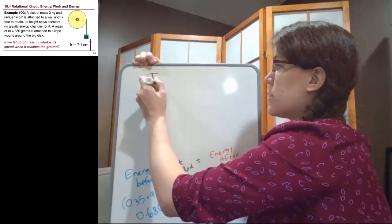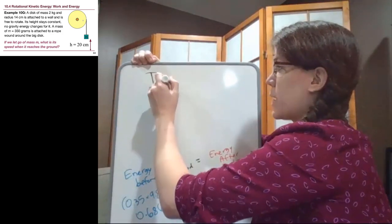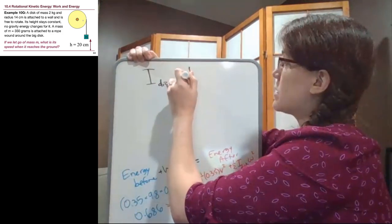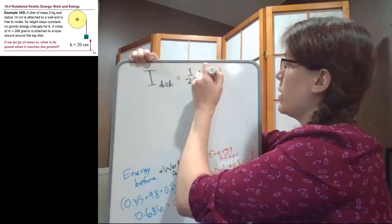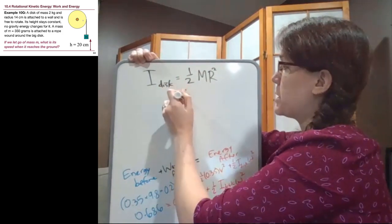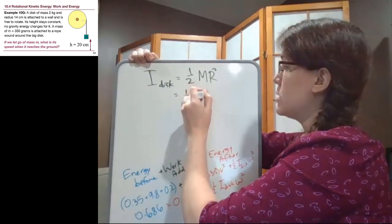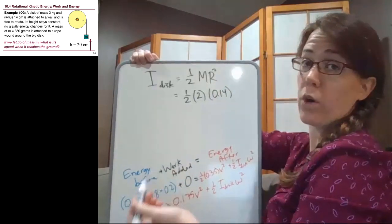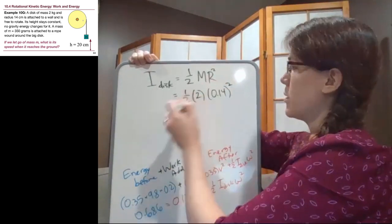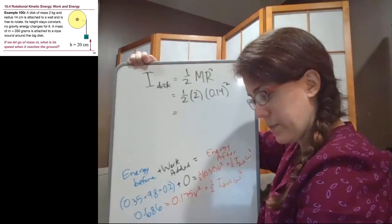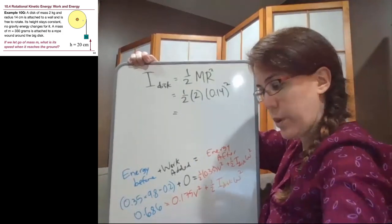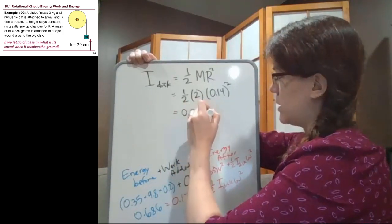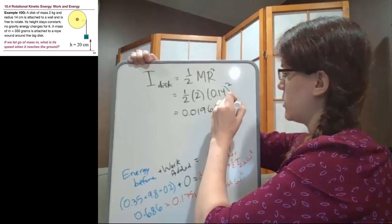First, we have the moment of inertia of the disk. That is a tool we can look up - that disks are one half MR squared. So this particular disk has a mass of two kilograms and a radius of 14 centimeters, or 0.14 meters. Just the radius gets squared. And so we get 0.0196 kilograms times meters squared.